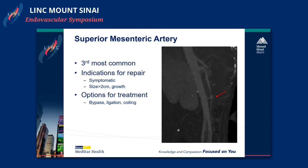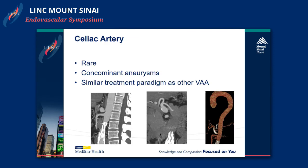Superior mesenteric artery aneurysm is the third most common. Indications for repair are very similar: symptomatic, size greater than 2 centimeters, and options for treatment include bypass, ligation, and coiling. This was a lady I took care of when I was on staff here at Sinai — a relatively young drug user who had a mycotic SMA pseudoaneurysm. I treated her with ligation, which was relatively distal, and she did really well and tolerated that very nicely.